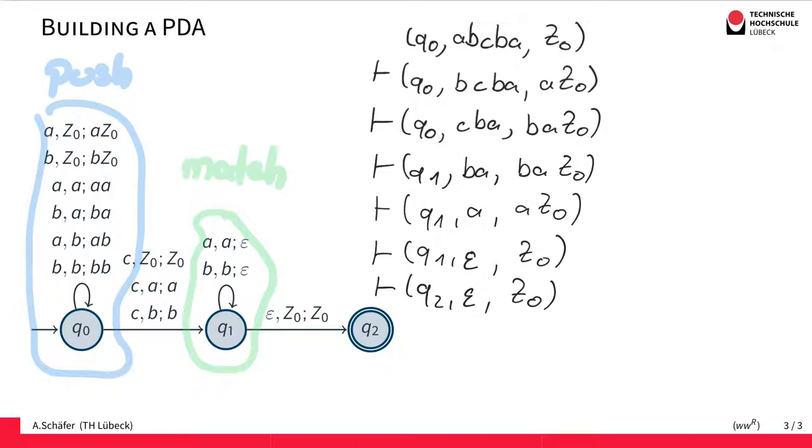You've seen a similar idea for N A's followed by N B's. So it's always the same. And in the end, you accept if the stack is empty. So if you have matched all the stack content apart from the Z0, then you accept.